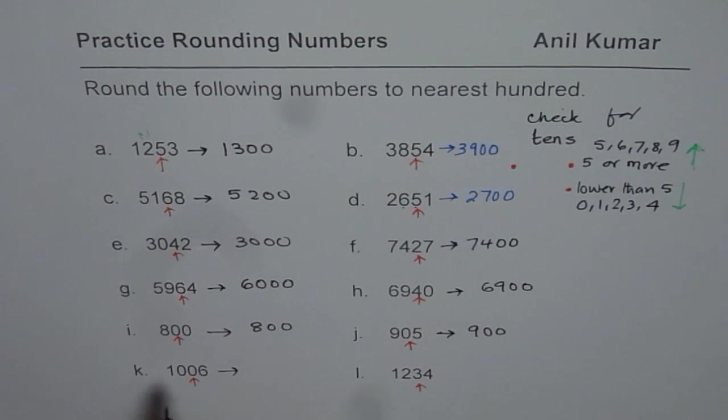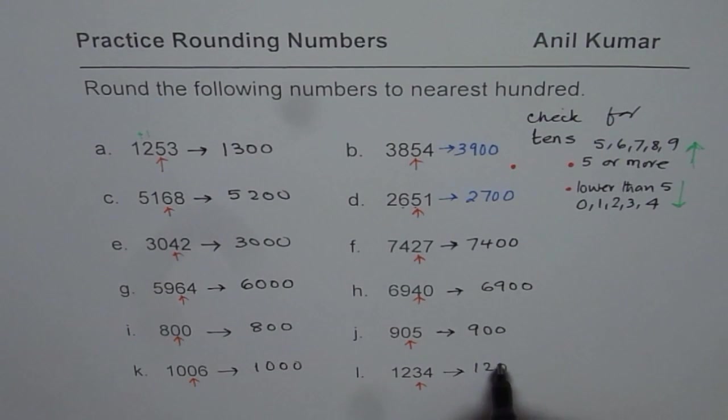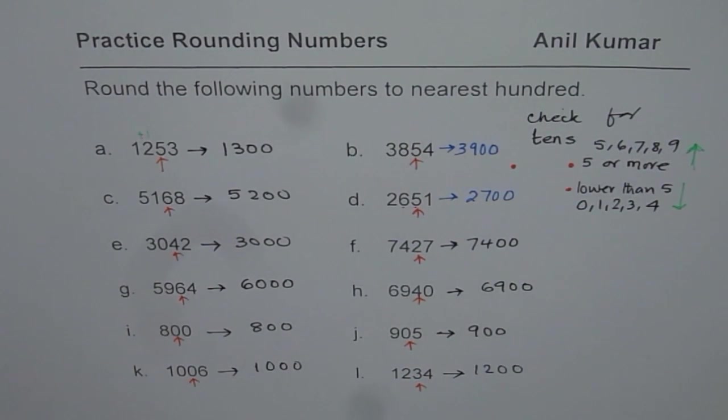Let's do 2 more. 1006. Number in 10s place is 0. And therefore 100s place remains same. And rest, you get 0s. So we get 1000. 1234. Number in 10s place is 3. So the numbers in 1s and 10s places will be replaced by 0s. So you get 1200. That is how you should be doing it.